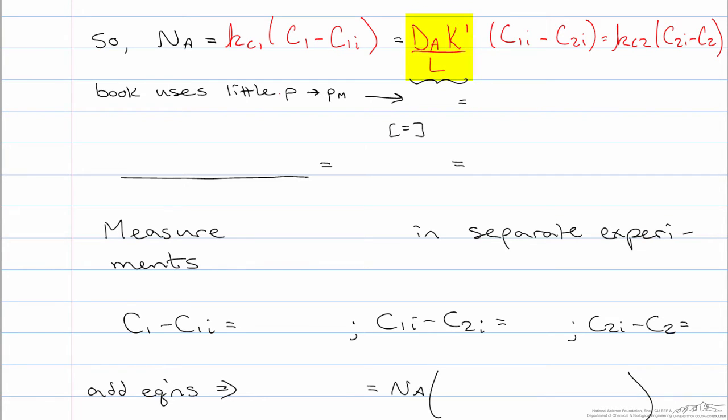So this combination of terms out in front here in the membrane transport term, that is defined as the permeance, which we will use a double line P for. So that is the permeance of the component in the membrane. This has dimensions of length per time, or can also be written in terms of moles per area per time per Pascal for a gas phase.